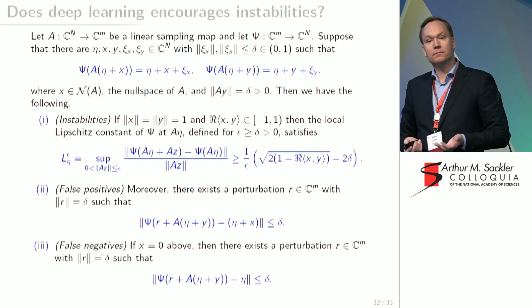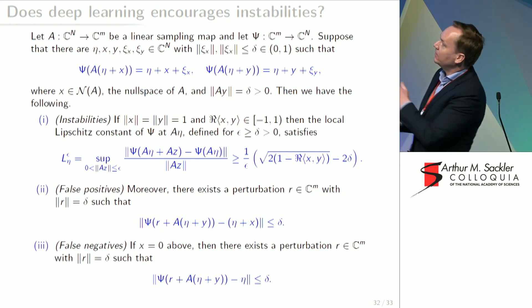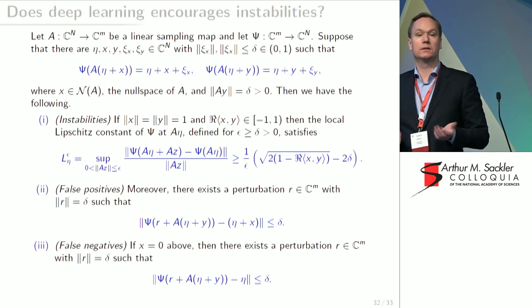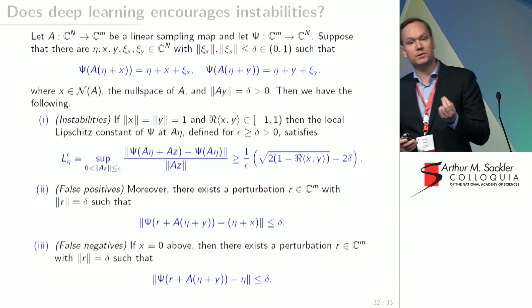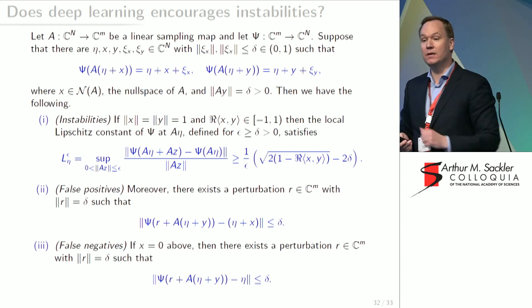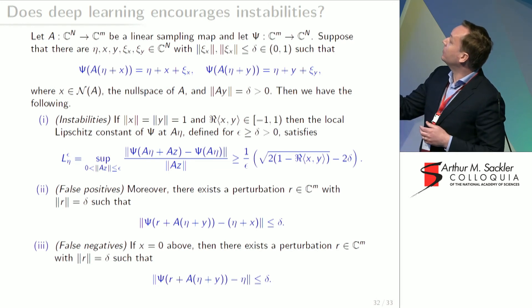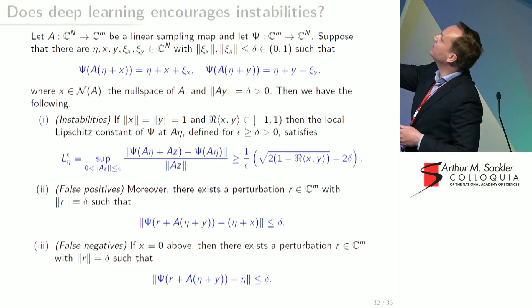So I would like to show you a theorem that gives us a little bit of understanding of why and how this is happening. So I'm simply going to tell you in layman terms what it says. You will have instabilities. And they can be as bad as you want. And by that I mean the local Lipschitz constant of your neural network can be as big as you want. You can also have false positives, meaning that a tiny little perturbation in the input is now potentially going to give you a detail like a tumor that shouldn't be in the image. You can have false negatives, meaning that you have something for which you take a tiny little perturbation and then suddenly you're removing an important part.